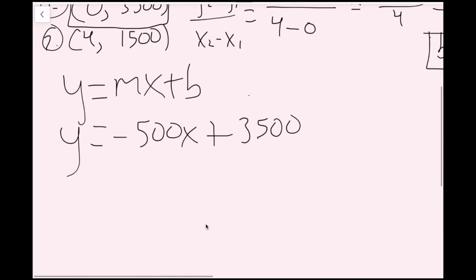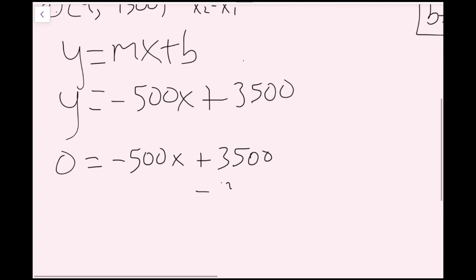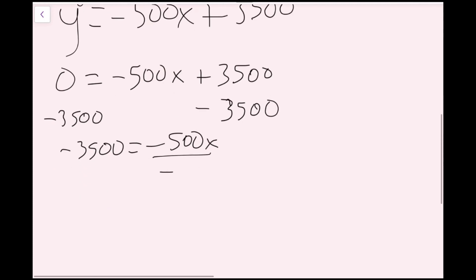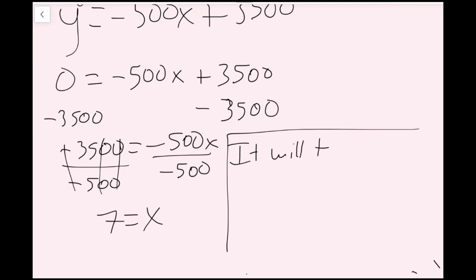I'm going to plug in 0 for y: 0 equals negative 500x plus 3,500. I'm going to subtract 3,500 on both sides to get negative 3,500 equals negative 500x. Then divide both sides by negative 500. The negatives cancel, and 35 divided by 5 is 7. So x equals 7. Since x is the amount of months, it will take 7 months to finish digging the tunnel. And now we're done.